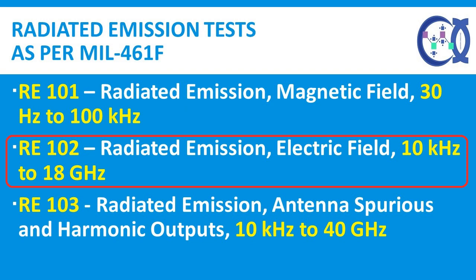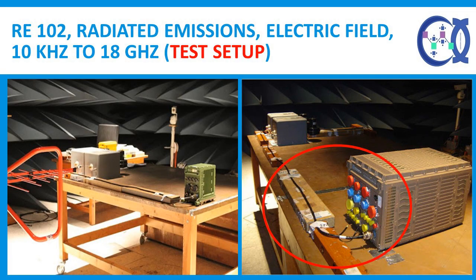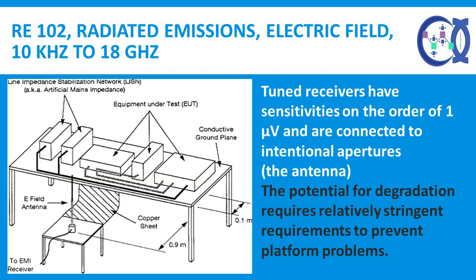RE-102 Radiated Emissions, Electric Field, 10 kHz to 18 GHz. The RE-102 applicability and limits are found in MIL-461F. Requirements are applicable to electric field emissions from the EUT and associated cables. The basic intent is to protect sensitive receivers from interference coupled through their antennas. Many tuned receivers have sensitivities on the order of 1 µV and are connected to intentional apertures constructed for efficient reception of energy in the operating range of the receiver, requiring relatively stringent requirements to prevent platform problems.